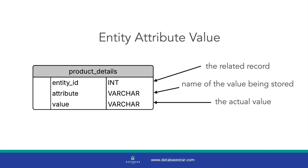The Entity Attribute Value Design is common because it allows you to be flexible with the data that you store. This is common with product attributes in an online store or customer attributes in a CRM, because the attributes can change over time or there can be a lot of attributes to store. It's called an Entity Attribute Value Design because it is a single table with three columns. The first column refers to the entity, which is the related record — this could be a customer ID or a product ID, for example.